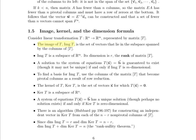Another way to think about the image is that it is the set of all possible outputs. It lives in the codomain, but it is not the same thing as the codomain. For instance, consider a normal function — not a linear transformation — like f(x) = x². In functional notation its domain is the real numbers and it maps from R to R, so its codomain is all real numbers.